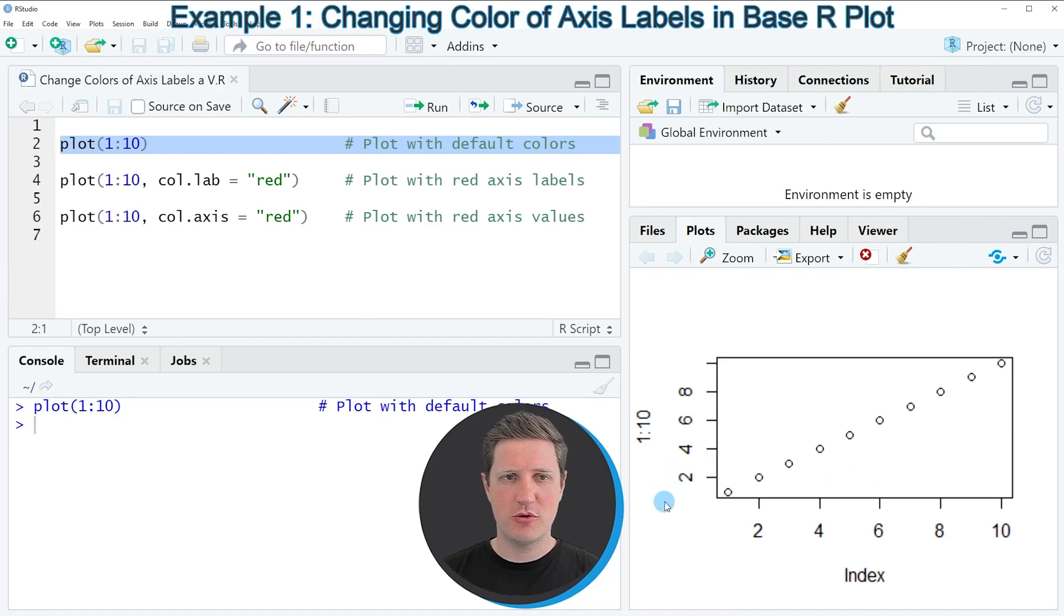Let's assume we want to change the labels of our plot. We can apply the code in line 4, where I'm specifying the col.lab argument to be equal to red.